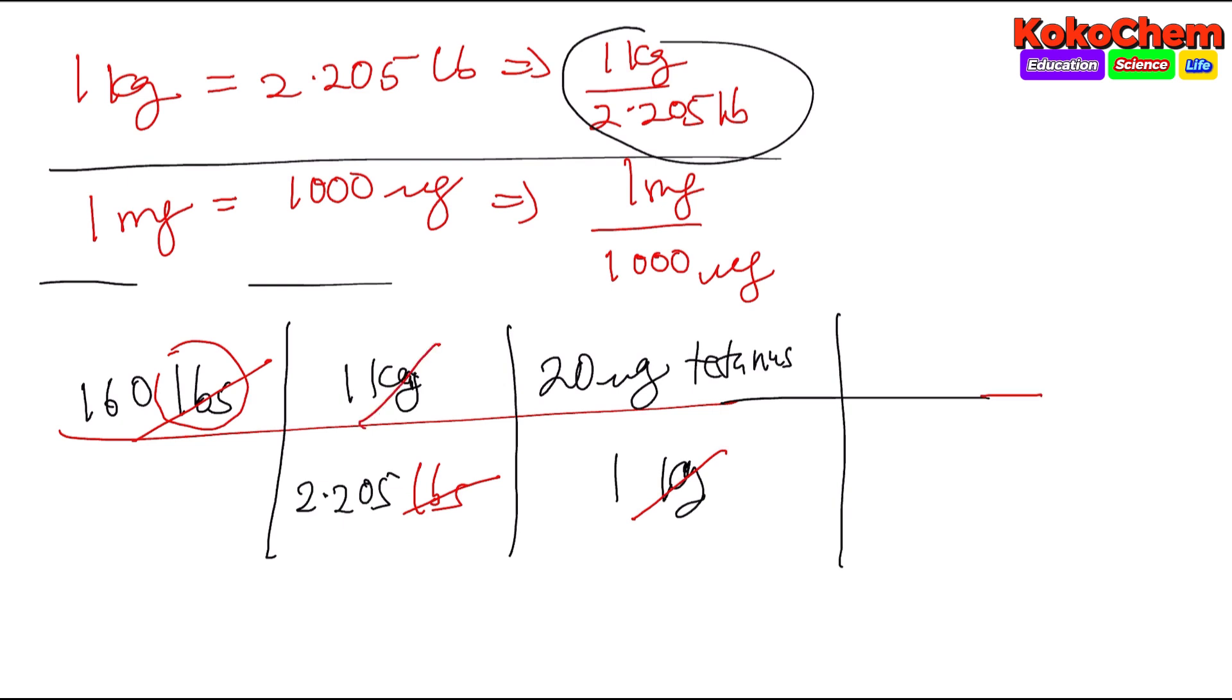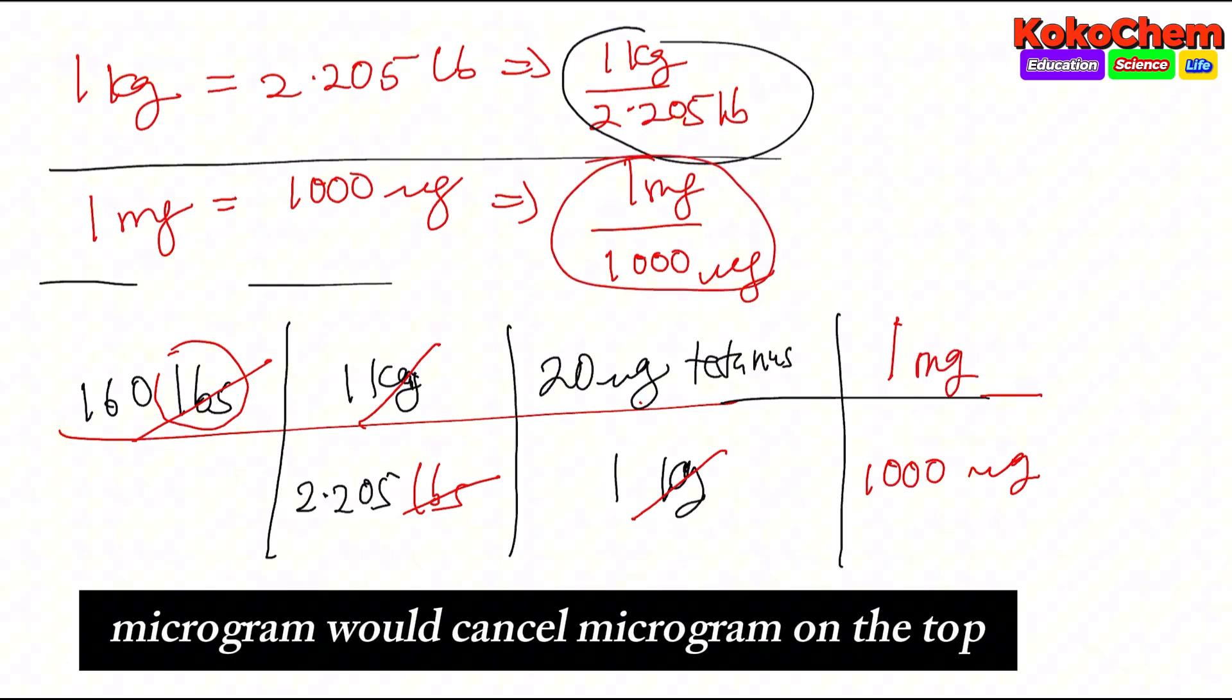The last step is converting micrograms to milligrams. Microgram will be at the bottom, so we put one thousand micrograms, and from this we put one milligram at the top. Microgram will cancel microgram.